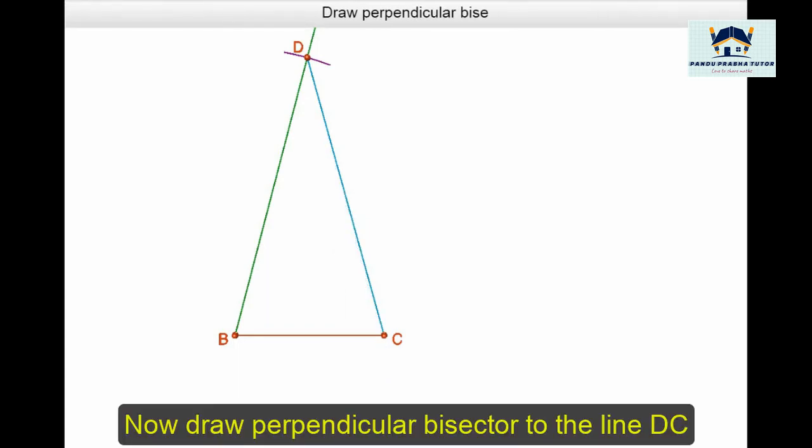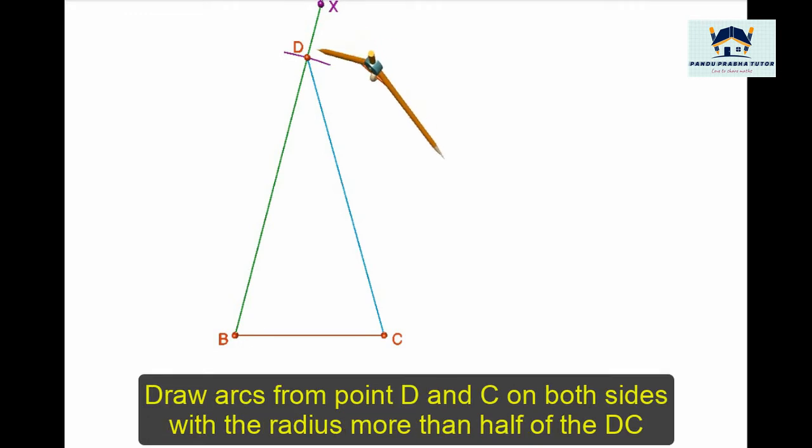Now draw perpendicular bisector of the line DC. By taking more than half of the length of DC, draw two arcs above and below from point D. With the same radius from point C, cut these two arcs.